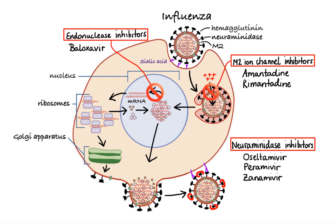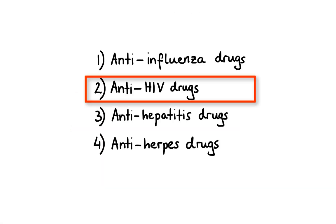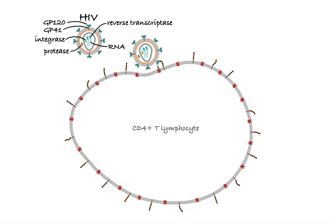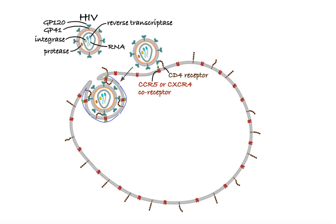Now let's move on to our next group of antivirals, that is anti-HIV drugs. HIV, or human immunodeficiency virus, is composed of three main layers: the envelope containing surface proteins GP120 and GP41, the viral matrix containing protease enzymes, and the core containing viral capsid encasing two copies of RNA and enzymes such as reverse transcriptase and integrase. The main target of HIV is the CD4-positive T lymphocytes, which are essential regulators of the immune system. The first step of HIV infection involves sequential binding of GP120, first to the CD4 receptor, and then to human coreceptor either CCR5 or CXCR4. This binding enables the viral envelope to fuse with the host cell membrane, allowing viral capsid to enter the host cell's cytoplasm.